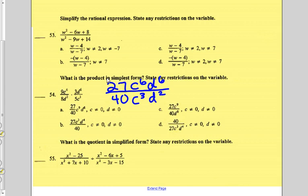You can't really do anything with the 27 and the 40, so 27 on top, 40 on bottom, that eliminates d as an answer.